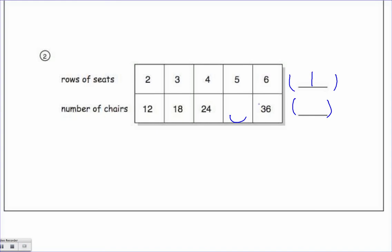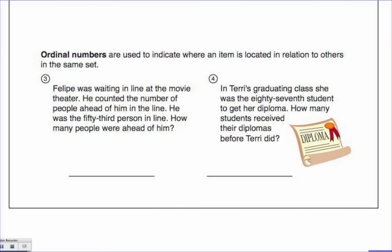Let's keep going. Ordinal numbers. Ordinal numbers are numbers that are used to indicate where an item is located in relation to others in the same set.